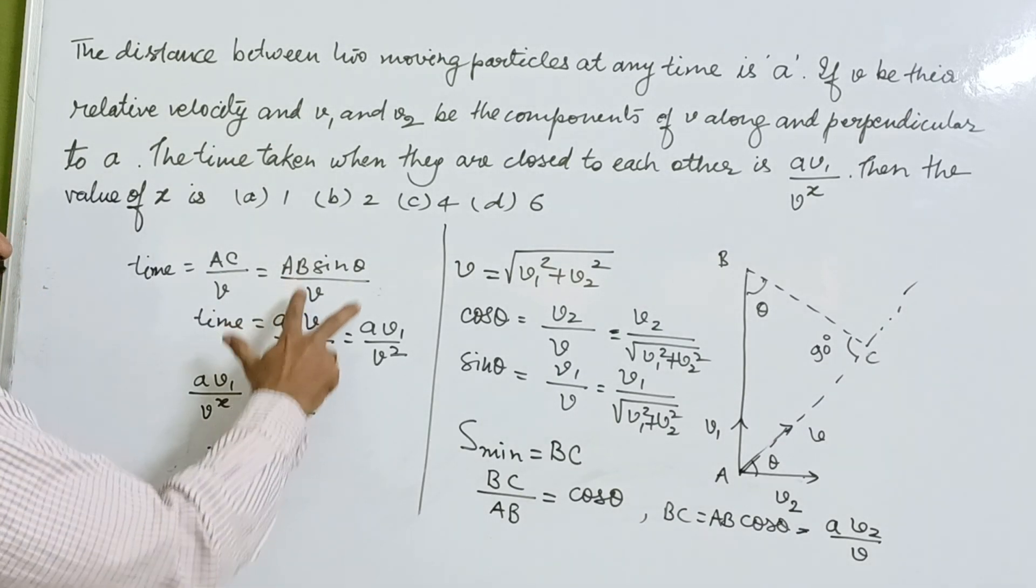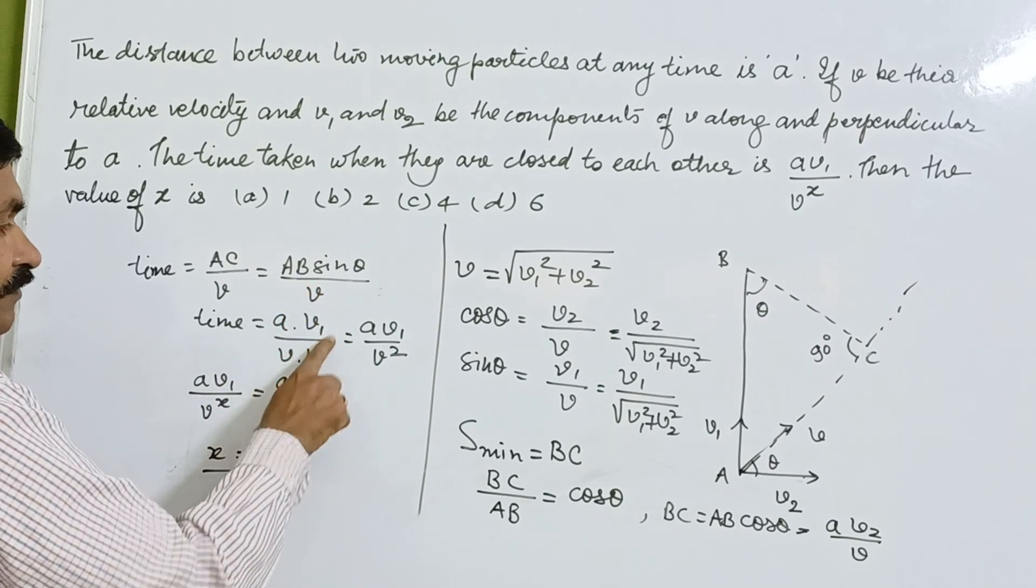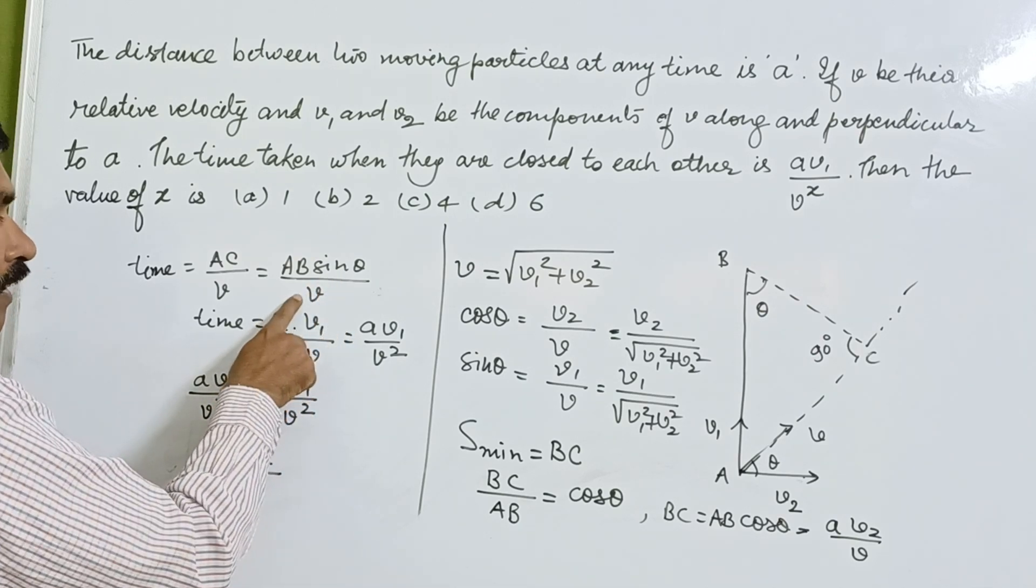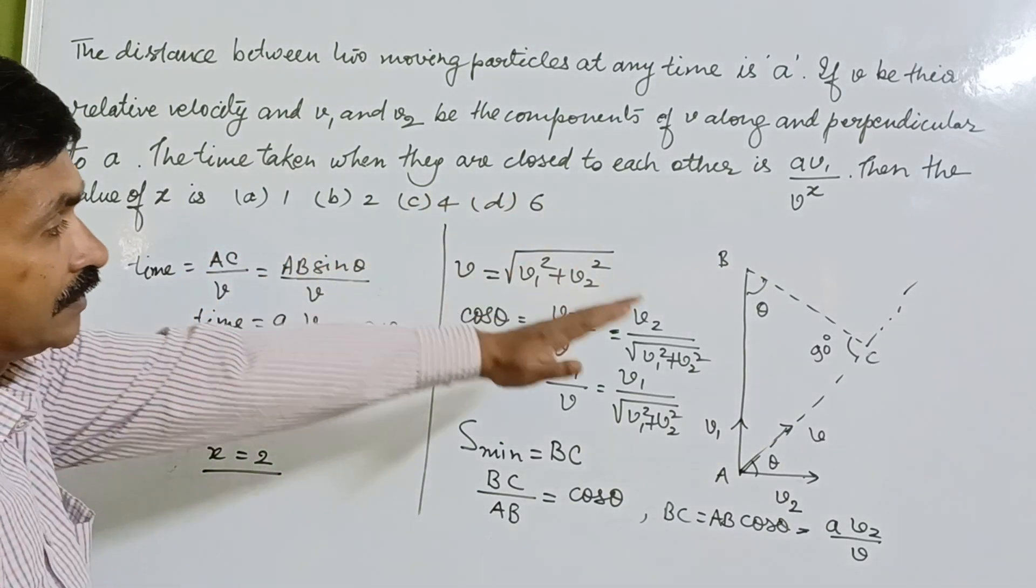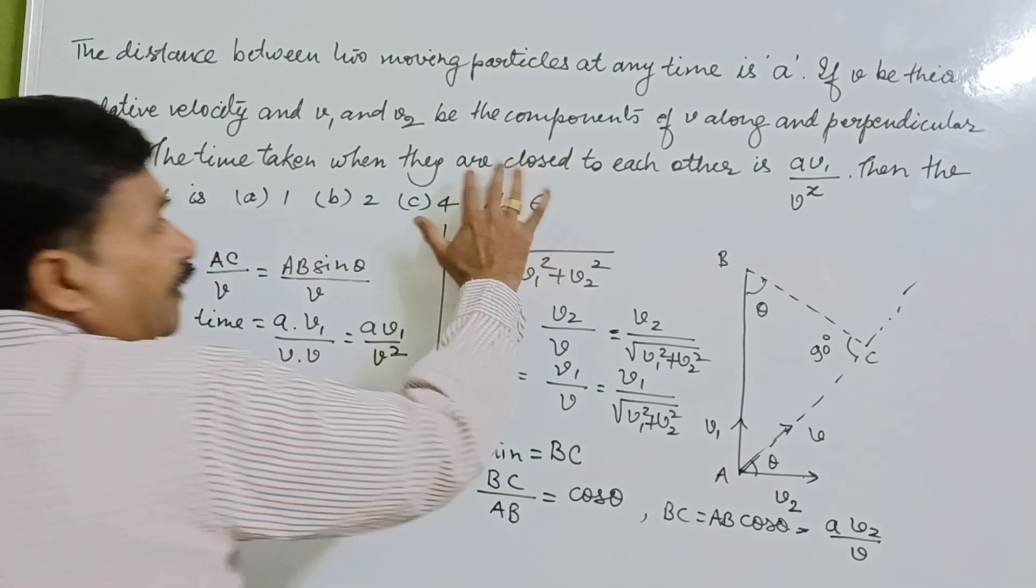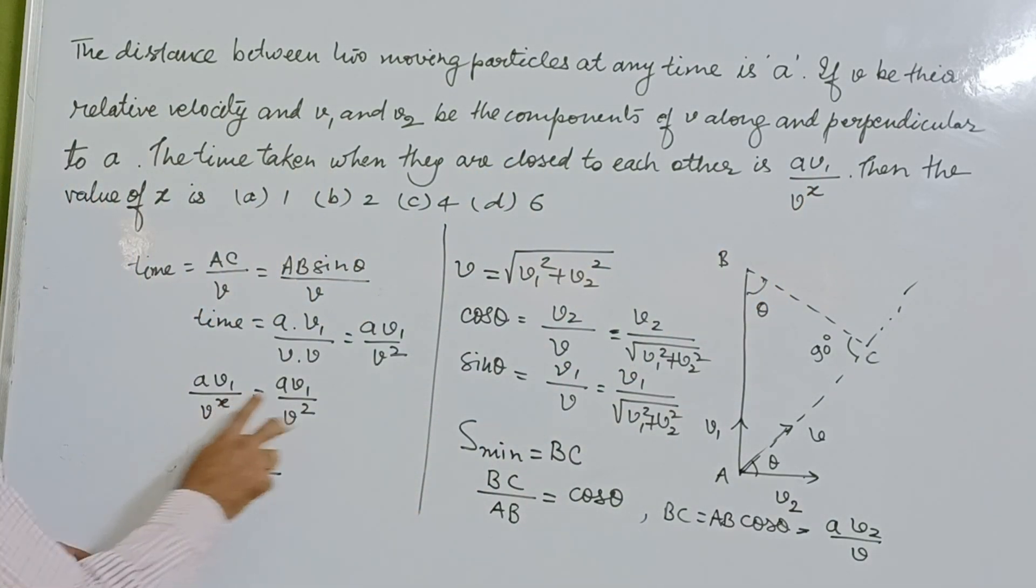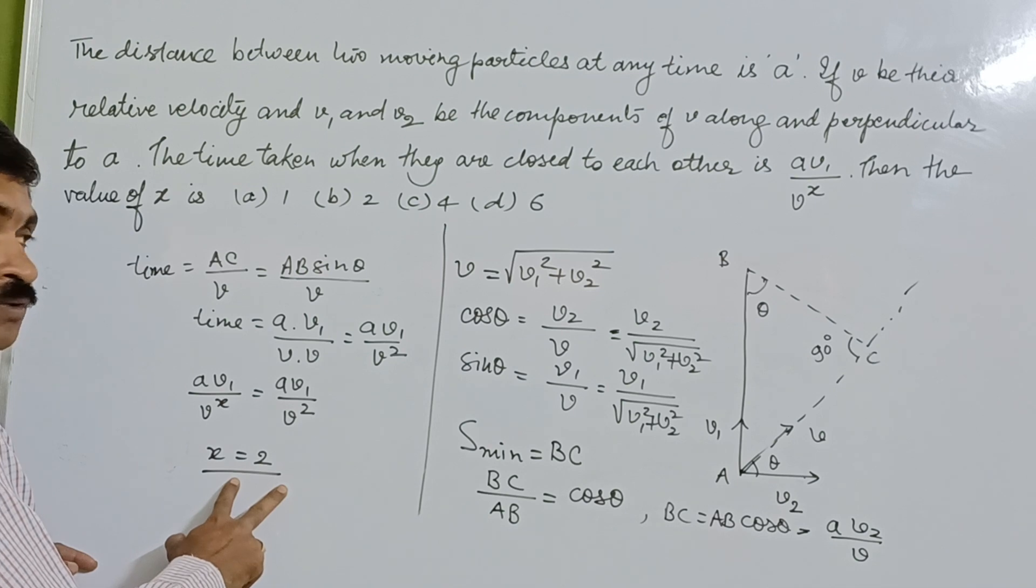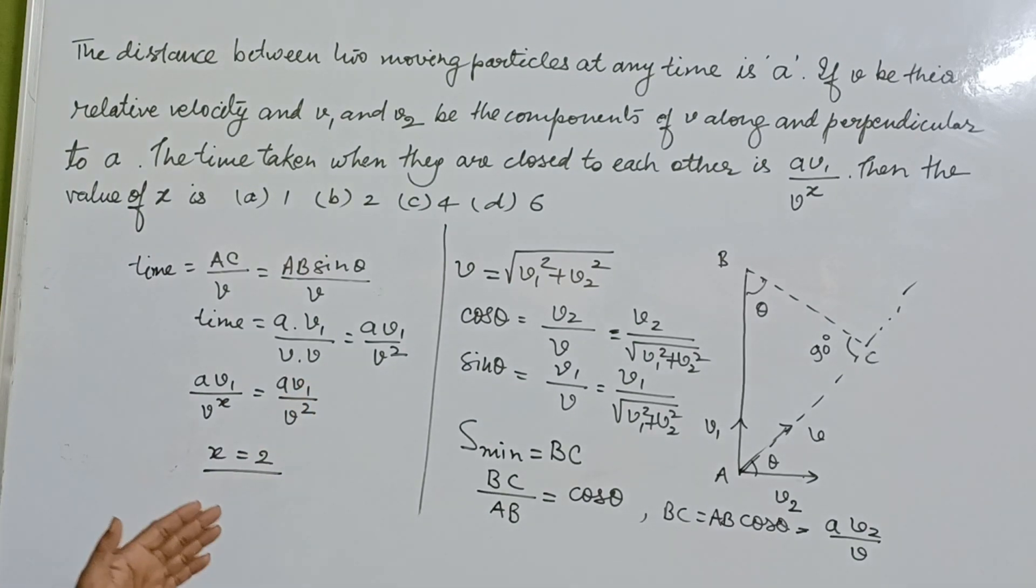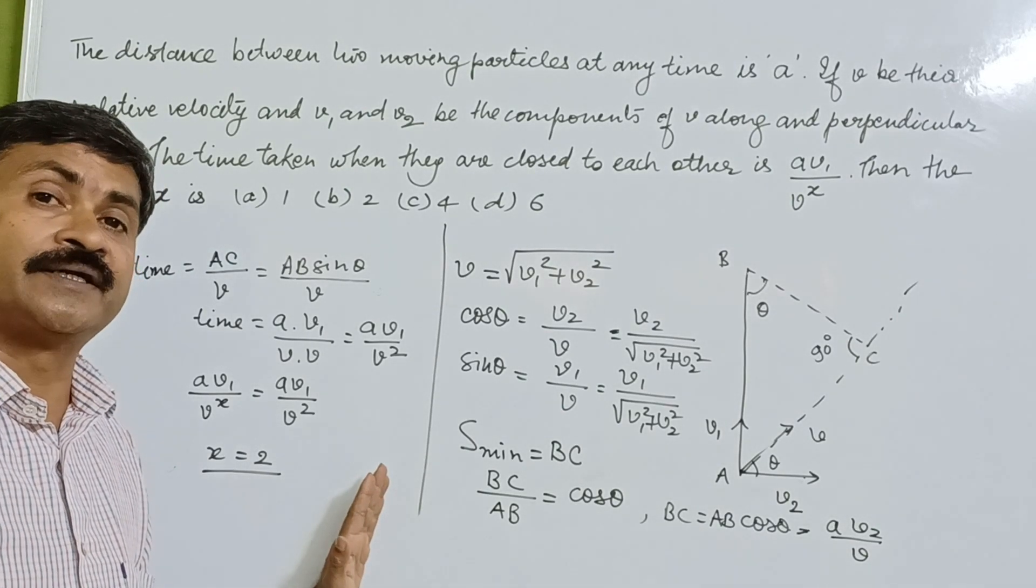So we can substitute the value of A, that is A sine theta is equal to V1 upon V. We already have A V1 upon V square here. Time, we can write by this, and it is given to us as A V1 upon V raised to the power X. So we compare, so X value, X will be equal to 2.